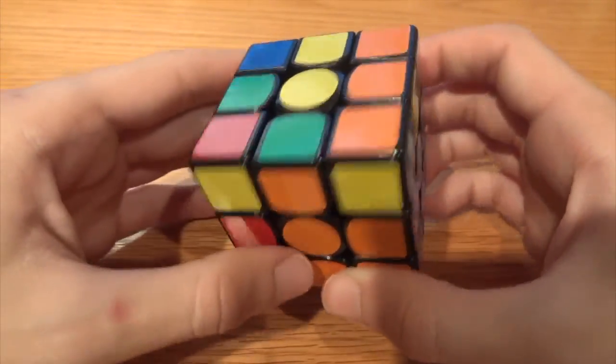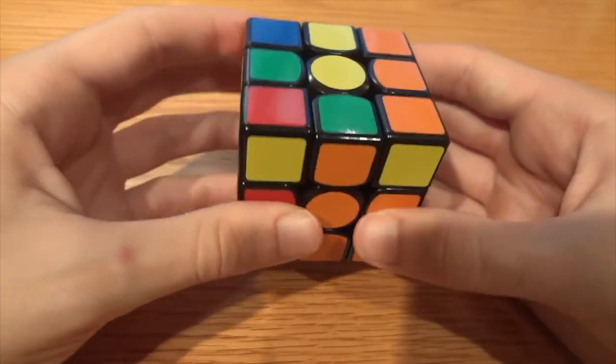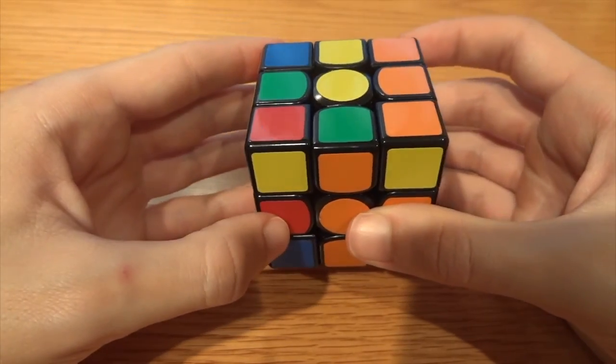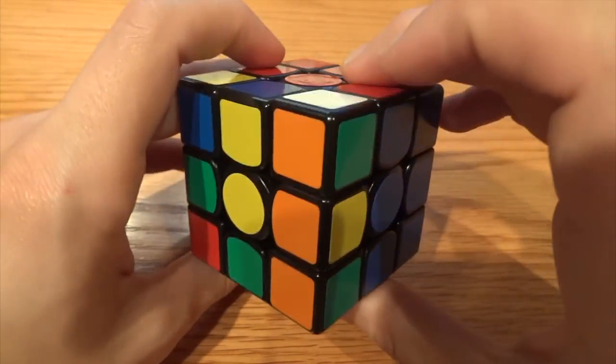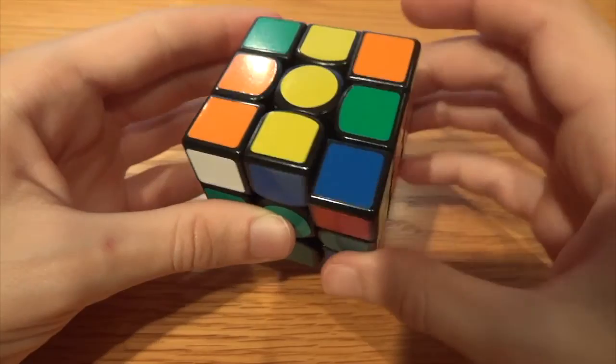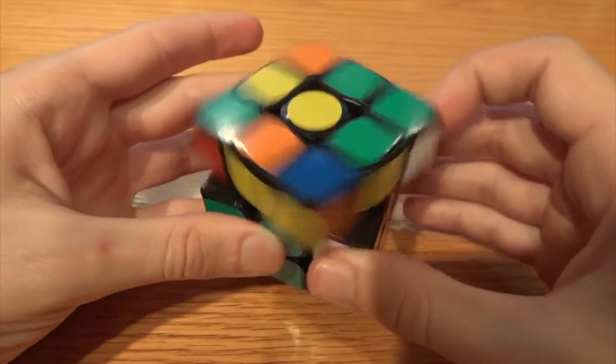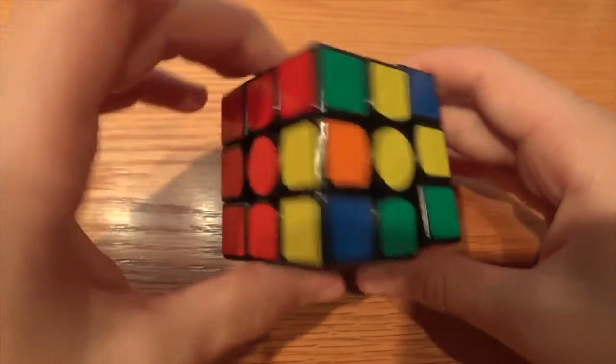And then I see this pair. So this is one of those cases where it's actually more efficient to hide the edge rather than hide the corner, so that's what I'm going to do. Got that in there.